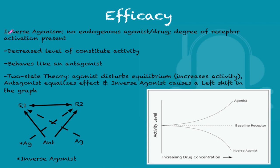Last but not least, inverse agonism means there is no endogenous agonist or drug present; however, there is still a degree of receptor activation. This is a decreased level of constitutive activity, and the inverse agonist behaves as an antagonist. The two-state theory explains this with a diagram: receptor 1 is the first state, receptor 2 is the second state, with an antagonist, an inverse agonist, and an agonist each playing distinct roles.